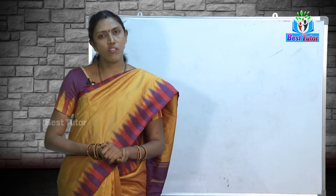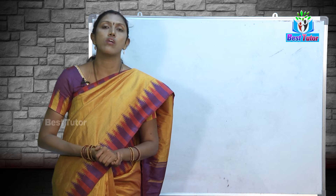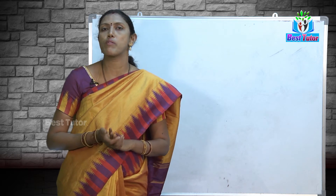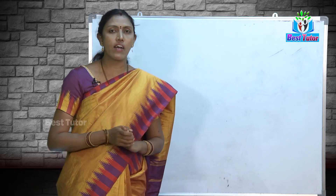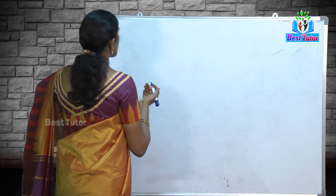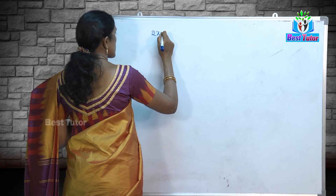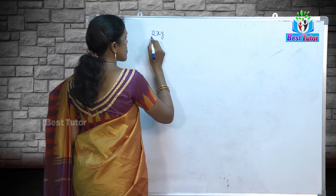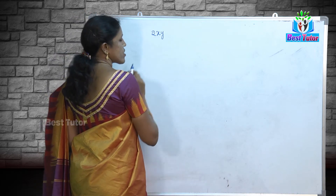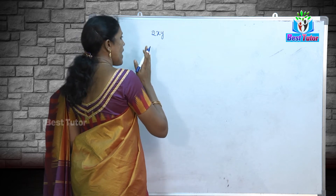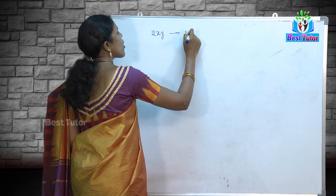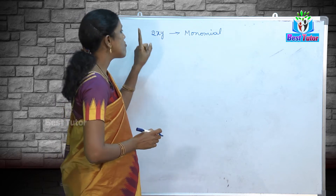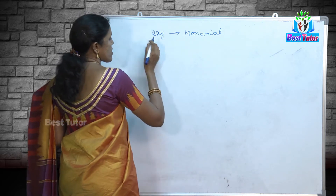Hello friends, welcome to Best Tutor. This is Rama Vishwanathan. In today's video we are going to learn about monomial, binomial, and so on. What do you mean by monomial? In the earlier videos we have learned about algebraic expressions and algebraic terms — like and unlike terms. If I have chosen 2xy, this is a term. It has a numerical coefficient of 2 and the literal coefficient is xy, and the factors are 2, x, and y. So it is a monomial. Why do I call it a monomial? It has only one term. So an algebraic expression which consists of only one term is called a monomial.